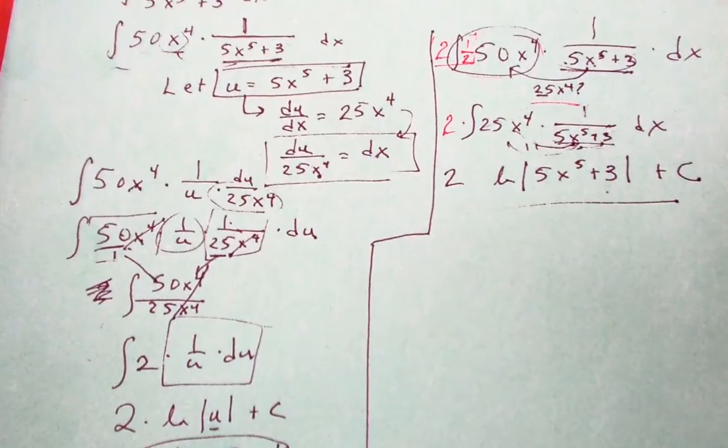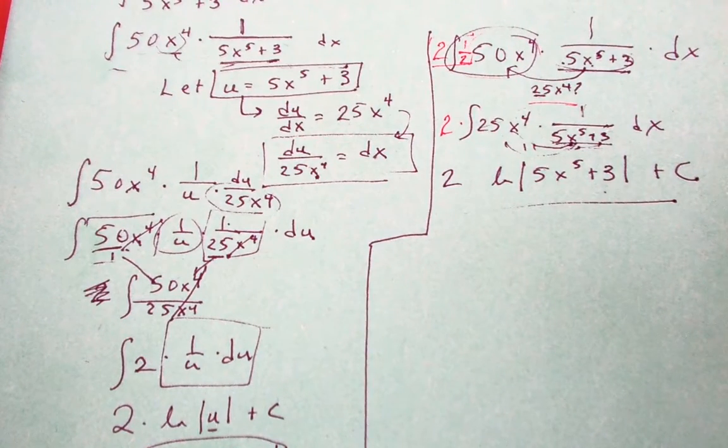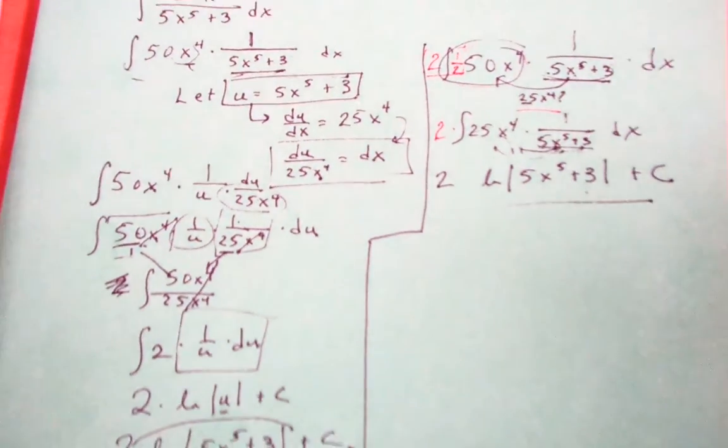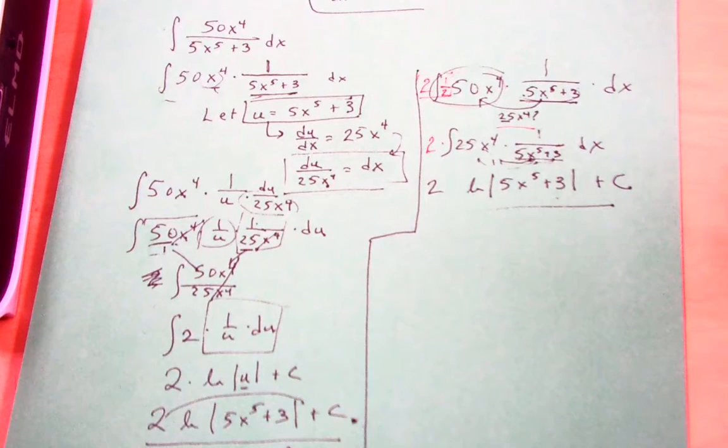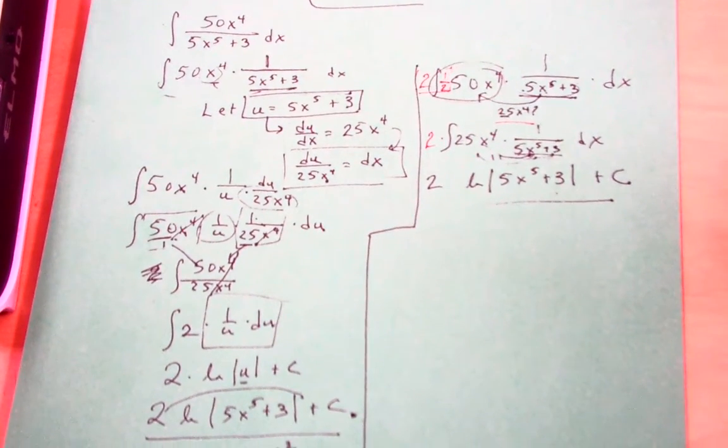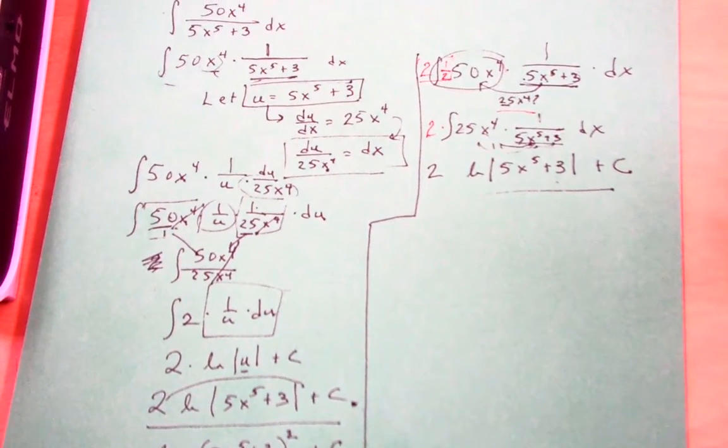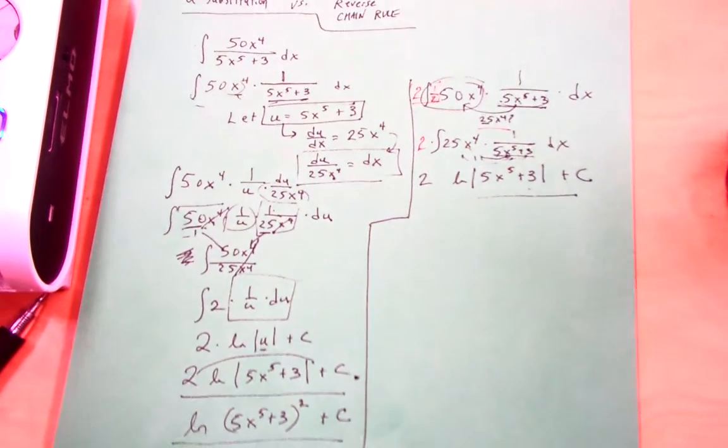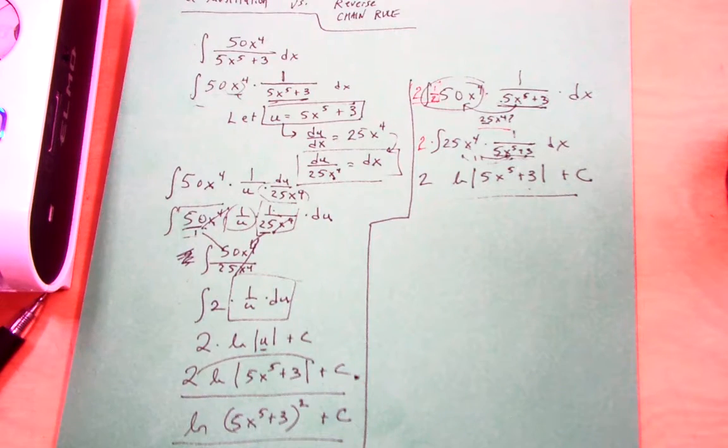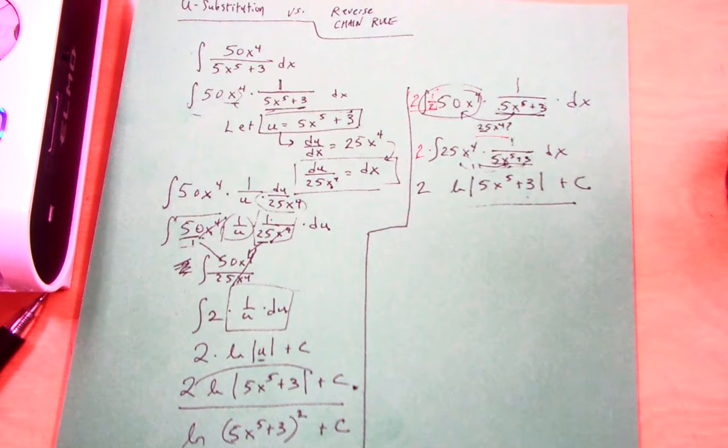So hopefully you can see why, at least in my point of view, I prefer the reverse chain rule. And if that fails to hold, you can do u-substitution. Of course you can use u-substitution for a reverse chain rule problem. But if you take a look at the amount of work, it's quite a bit more. Nevertheless, the more tools you have, the more capable you will be. Alright, I hope this helps.